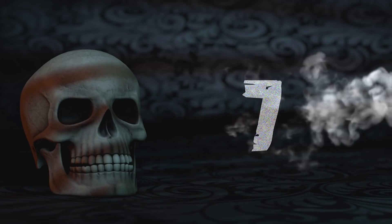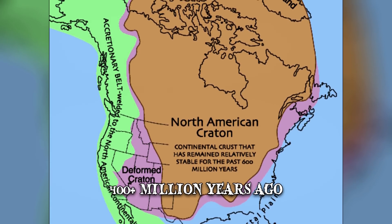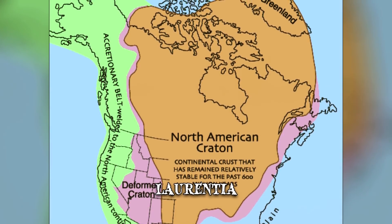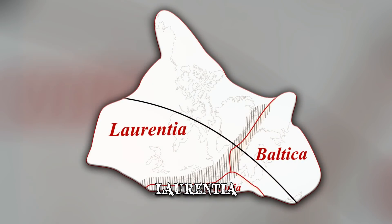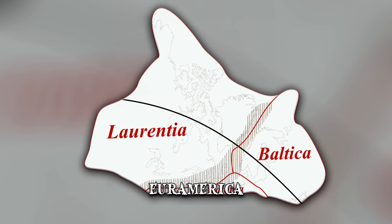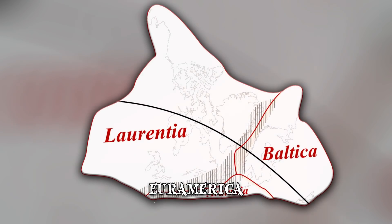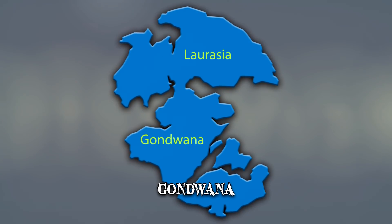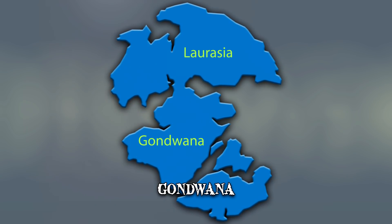Number 7: Formation. More than 400 million years ago, a continent called Laurentia, which included parts of North America, collided with smaller landmasses to form Euramerica. It then merged with a supercontinent called Gondwana, which included Australia, Africa, South America, and parts of the Indian subcontinent.